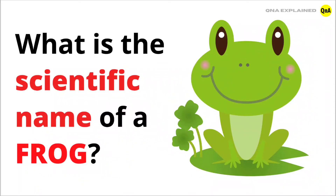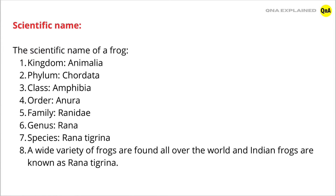What is the scientific name of a frog? The scientific name of a frog: Kingdom Animalia, Phylum Chordata, Class Amphibia, Order Anura.